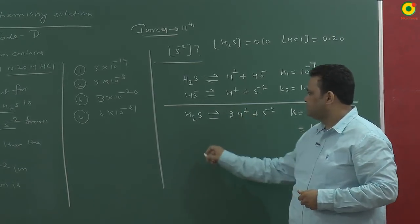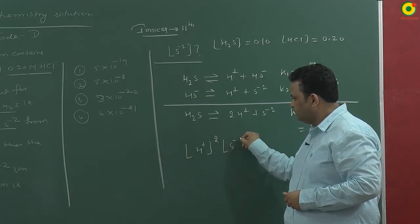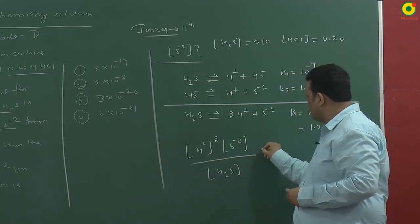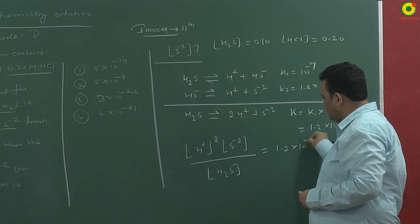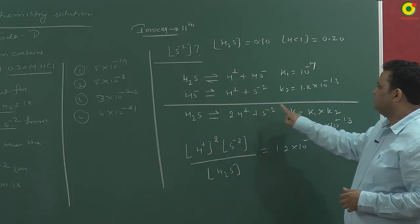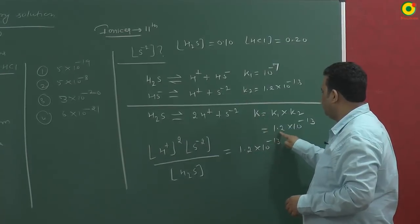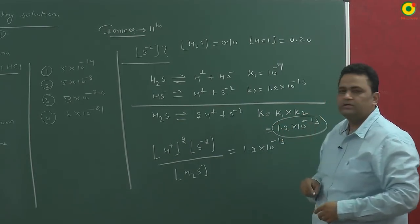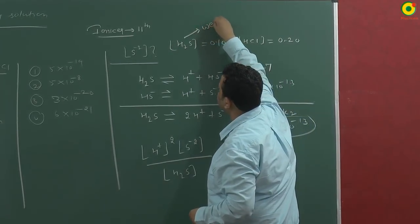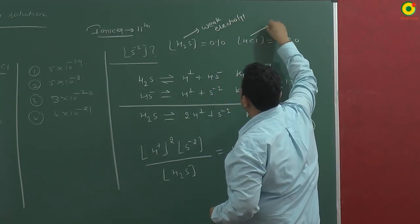If I write expression for this then it will be H plus square into S minus 2 upon H2S concentration is equal to 1.2 into 10 to the power minus 20. We can see that for dissociation of H2S, this value is very low means this is a very weak electrolyte while HCl is a strong electrolyte.